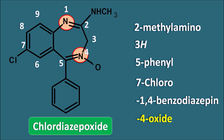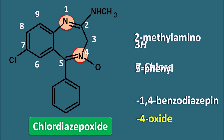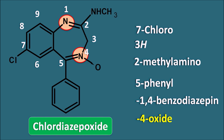We arrange the substituents in alphabetical order: 7-chloro comes first (C), then 3H, then 2-methylamino (M), then 5-phenyl (P). Arranging alphabetically, the full IUPAC name of chlordiazepoxide is: 7-chloro-3H-2-methylamino-5-phenyl-1,4-benzodiazepine-4-oxide.